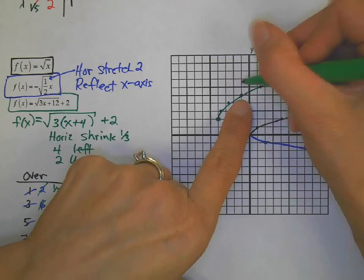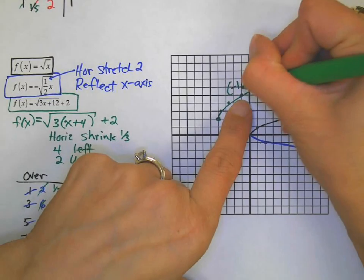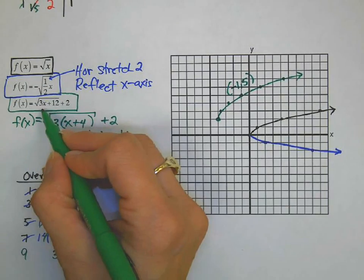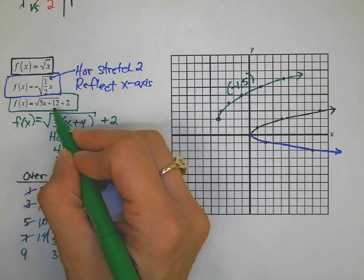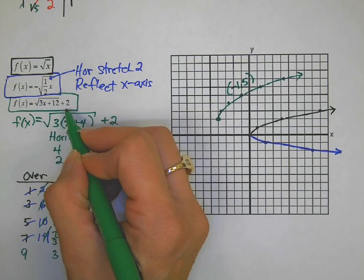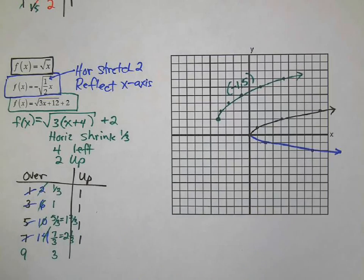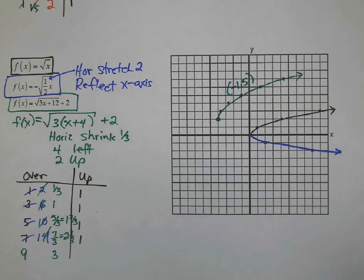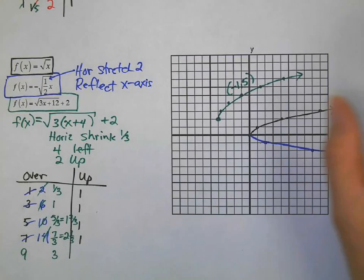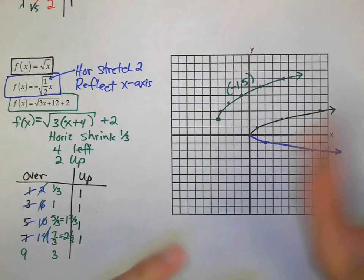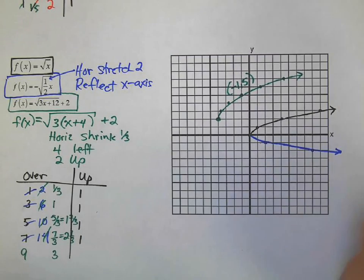Why don't we take that one nice point that we found, negative one comma five, and see if it works. Three times negative one is negative three plus twelve. The square root of nine is three plus two, five. Did it work? Oh, yes, it worked. Make sure you study growth charts and study the difference between horizontals and verticals. You've got a lot of information here, so stuff might start getting messed up in your brain. So make sure you study each of them and good luck.